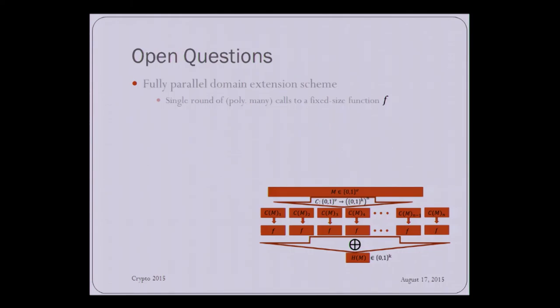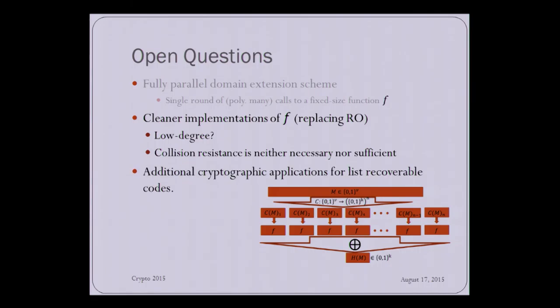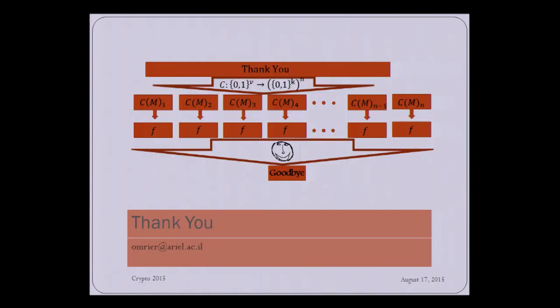So to conclude, we have the first fully parallel domain extension scheme. And in the random Oracle model, it guarantees collision resistance and weak indifferential ability. It is simple, and it is degree preserving, and it has all the applications that I just mentioned. And a few open questions. Well, it would be nice to have a cleaner implementation of F replacing the random Oracle, and maybe even a low degree implementation, which will make use of the degree preserving property of our construction. However, we don't really know what are the sufficient and necessary requirements from such an underlying function F. We do know that collision resistance of F is not sufficient nor necessary for the collision resistance of our construction. And finally, list recoverable codes seem like a very nice primitive to have, and it seems like they should have other applications in cryptography. And that's it. Thank you very much.